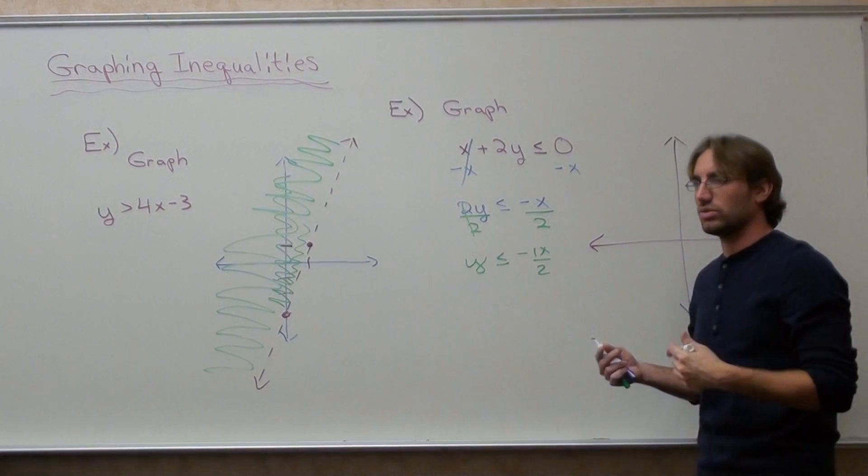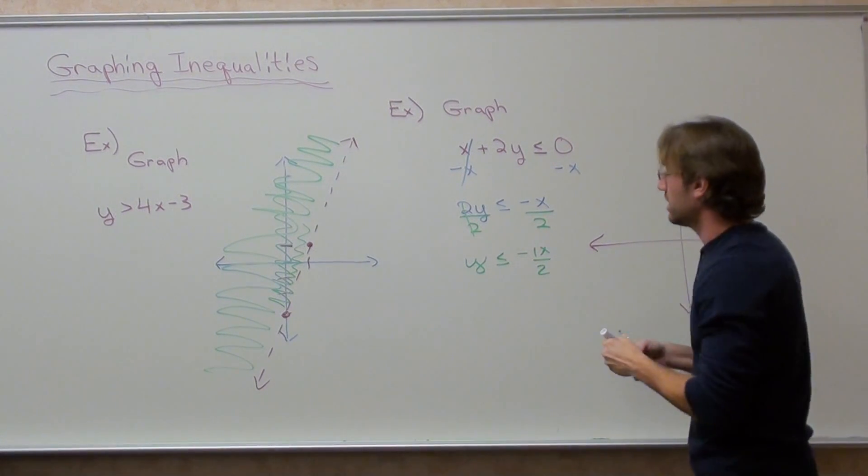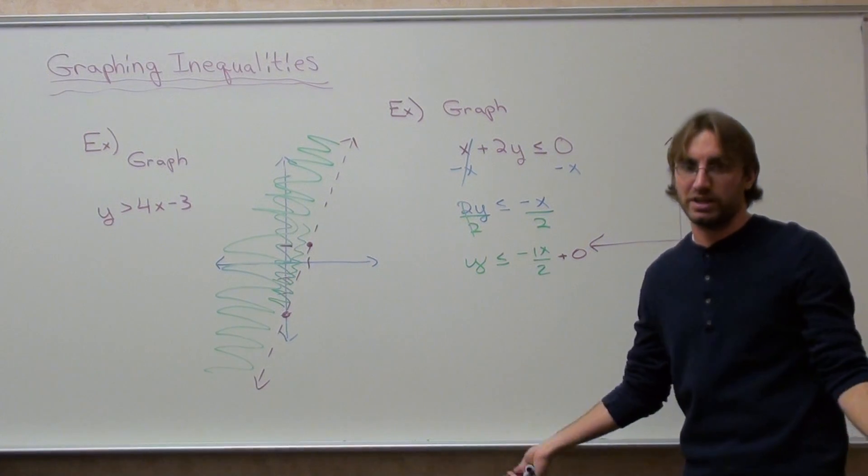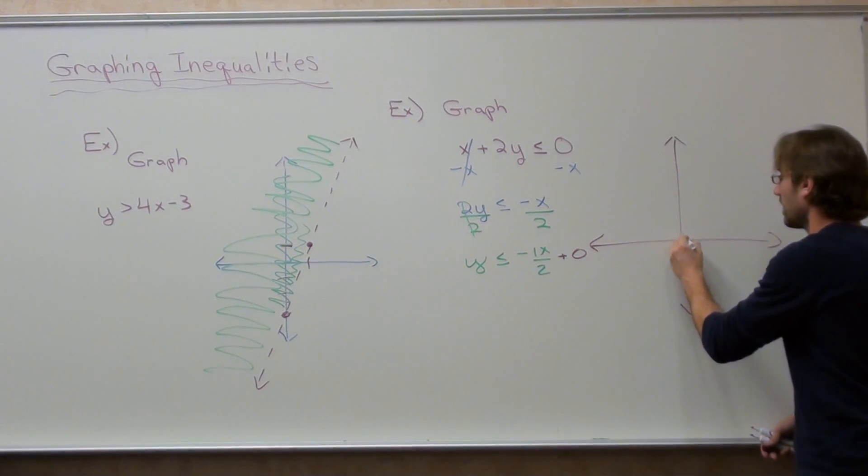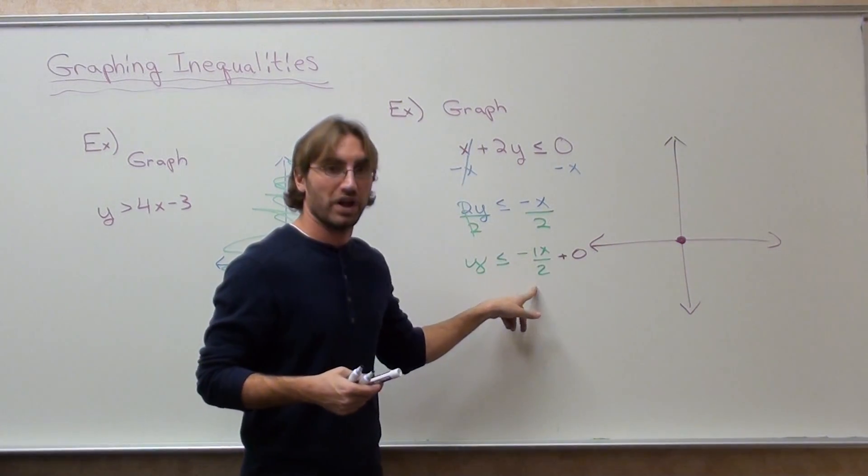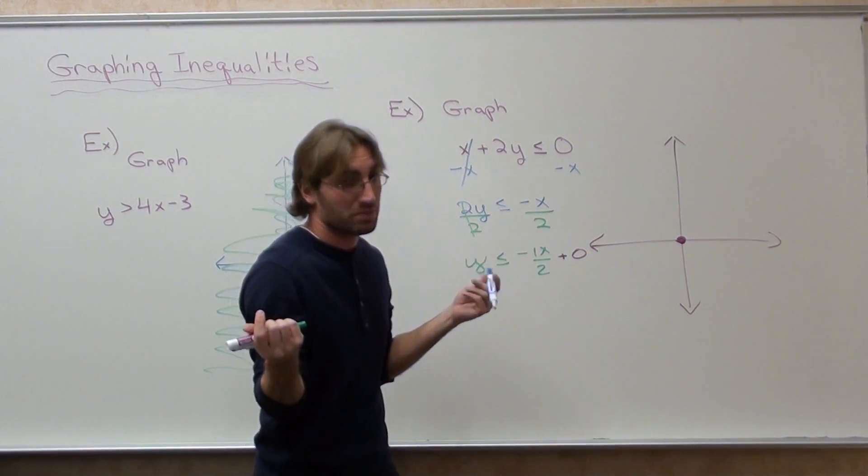What is the y-intercept? There is no y-intercept shown, but it's plus zero. If they don't show you the y-intercept, it's automatically at zero. Then the slope from the y-intercept is down 1, right 2.